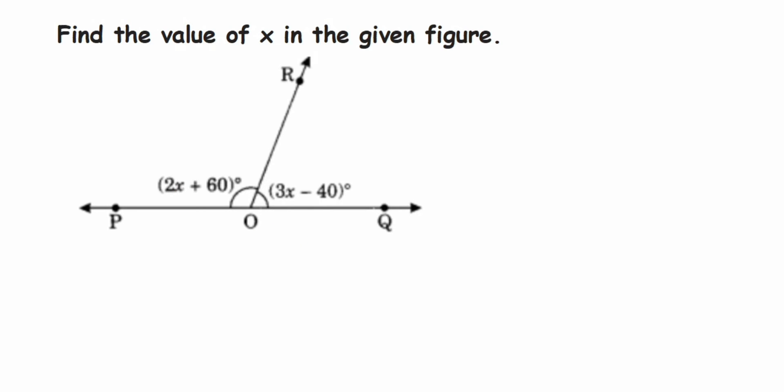They have given two angles. One angle is 2x plus 60 and one more angle is 3x minus 40. Then how to find the value of x here? If you see these two angles, this angle and this angle, they're lying on a straight line.